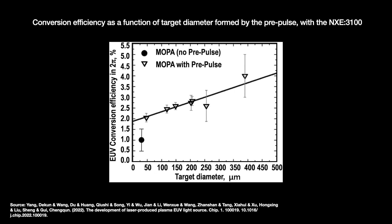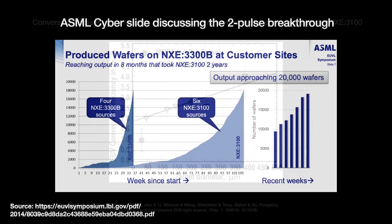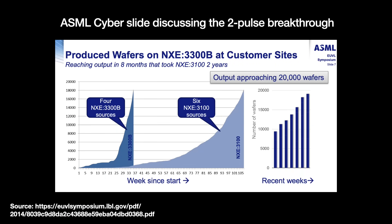The first NXE 3100 MOPA plus pre-pulse systems arrived in 2013 and demonstrated power levels of 50 watts — a big jump from the prior NOMO and even MOPA systems. A year later, the NXE 3300 added another round of power amplification to the pulse laser, allowing EUV light output to soar to 80 and then 100 watts. EUV wafer fabrication numbers started to accelerate, signaling that EUV had finally broken through.